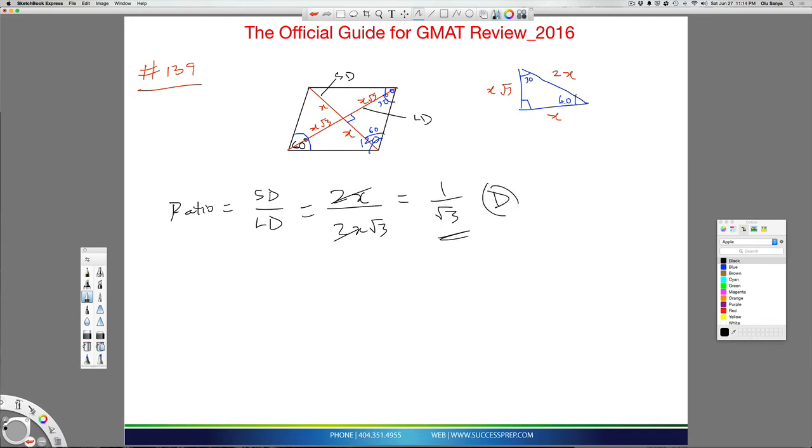So the trick really here is the 30-60-90 rule. You need to know this, that the side that the 30 is looking at is always X, side 60 is looking at is always X root 3, and the hypotenuse is 2X, and that's pretty much what you use to break this up. Again, knowing that when two diagonals intersect, they form a 90-degree angle. That allows us to use a 30-60-90 triangle to solve this. So the answer here is D.